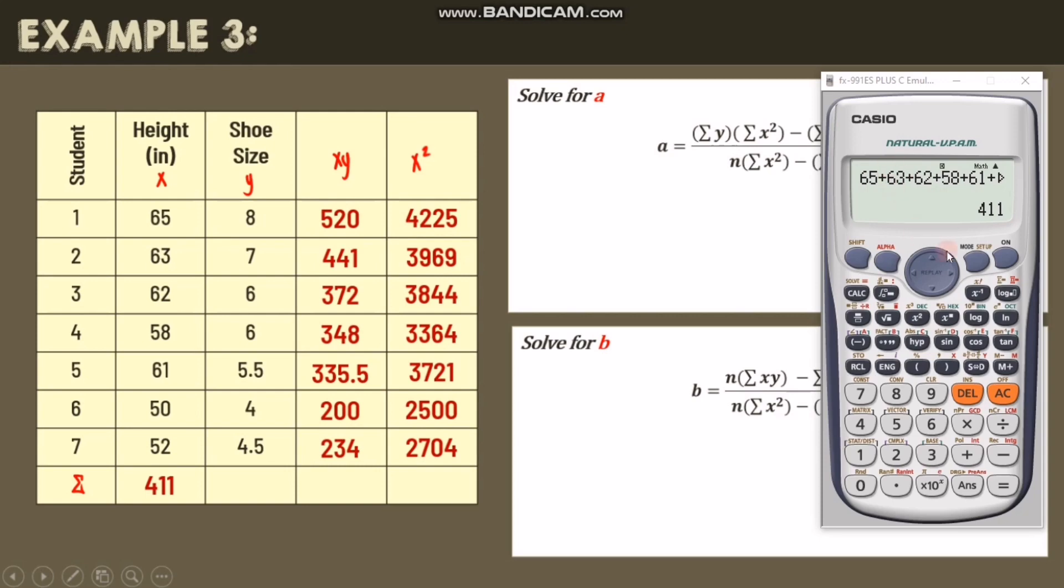Next, let's get the summation of y. 8 plus 7 plus 6 plus 6 plus 5.5 plus 4 plus 4.5. So the answer is 41. The summation of y is 41.